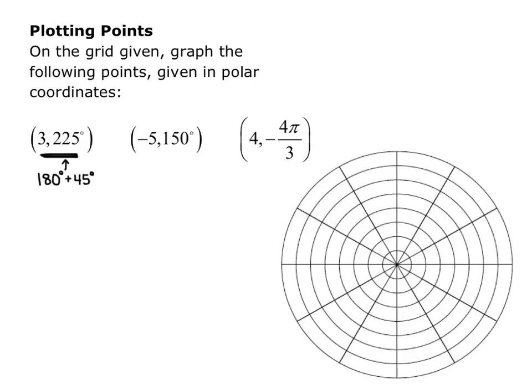225 degrees is 180 degrees plus 45 degrees, so that tells me that my point is going to be in the third quadrant, along the angle that bisects the third quadrant. I'll sketch that angle in, and since r is 3, I want to count out 3 from the origin along that ray. So my point will be 3 circles out from the origin on that 225-degree line.